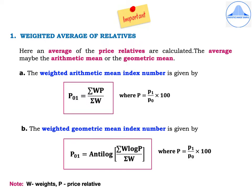Weighted Price Index Numbers are classified into two categories: Weighted Average of Relatives and Weighted Aggregative Index Numbers. Under Weighted Average of Relatives, we use Price Relatives with the formula P = (P1/P0) × 100, where P0 is the base year price and P1 is the current year price. An average of the price relatives is calculated — either the arithmetic mean or the geometric mean. The Weighted Arithmetic Mean Index Number is given by P01 = summation(WP) / summation(W), where W are the weights and P is the price relative.